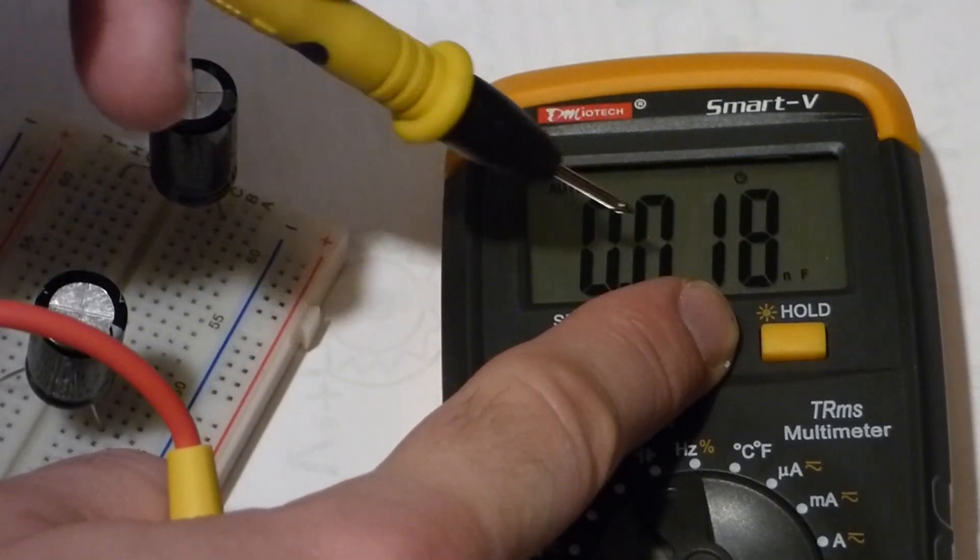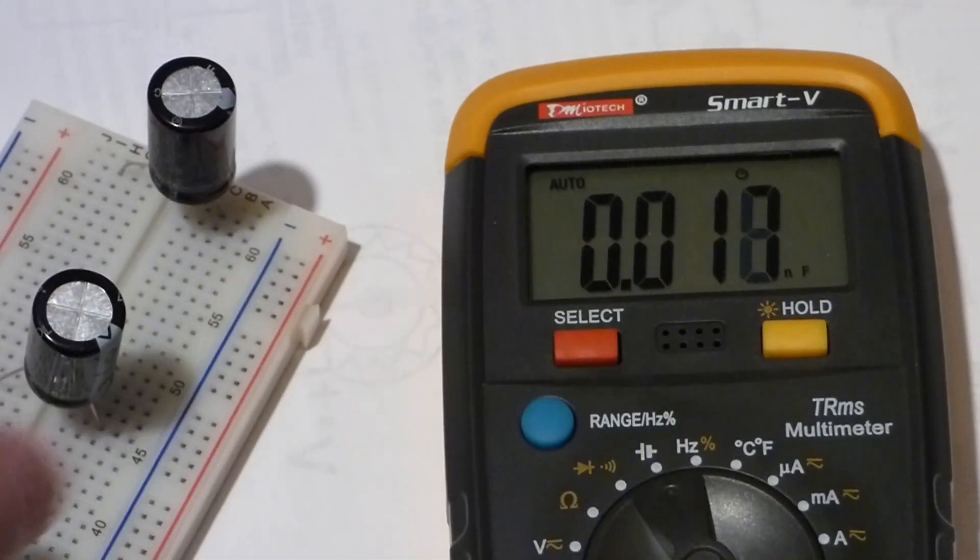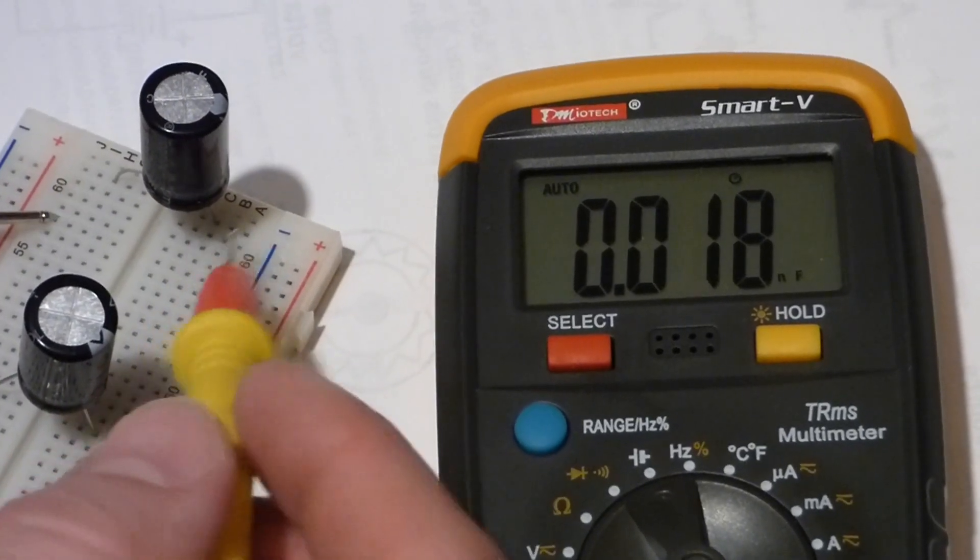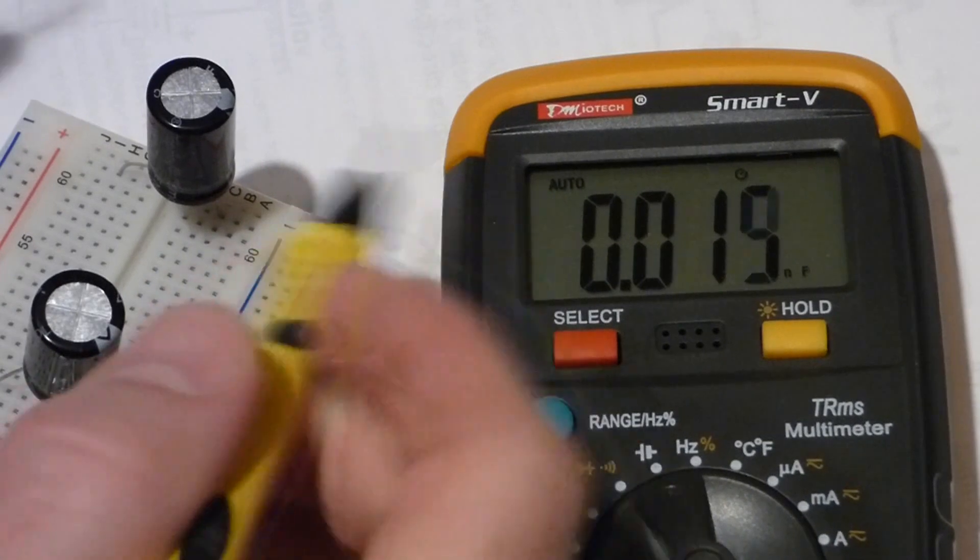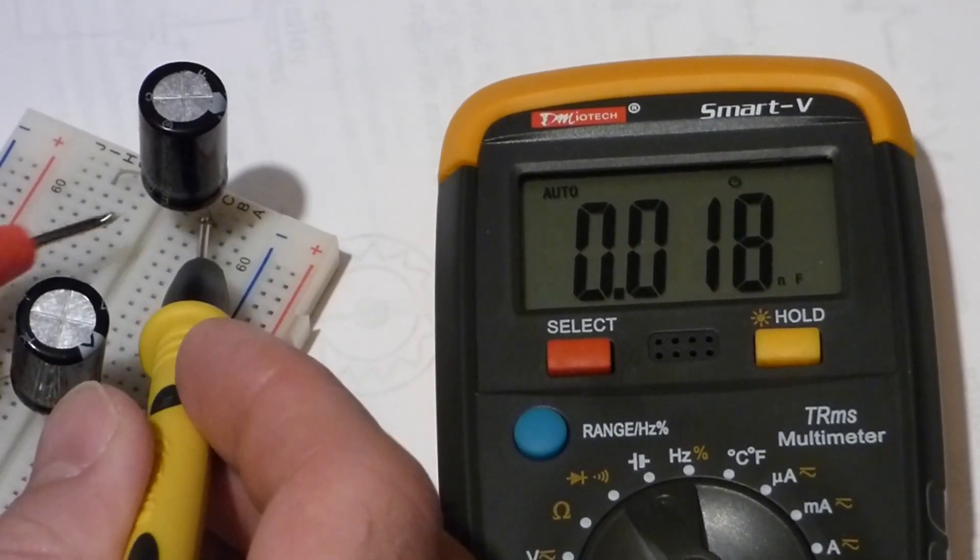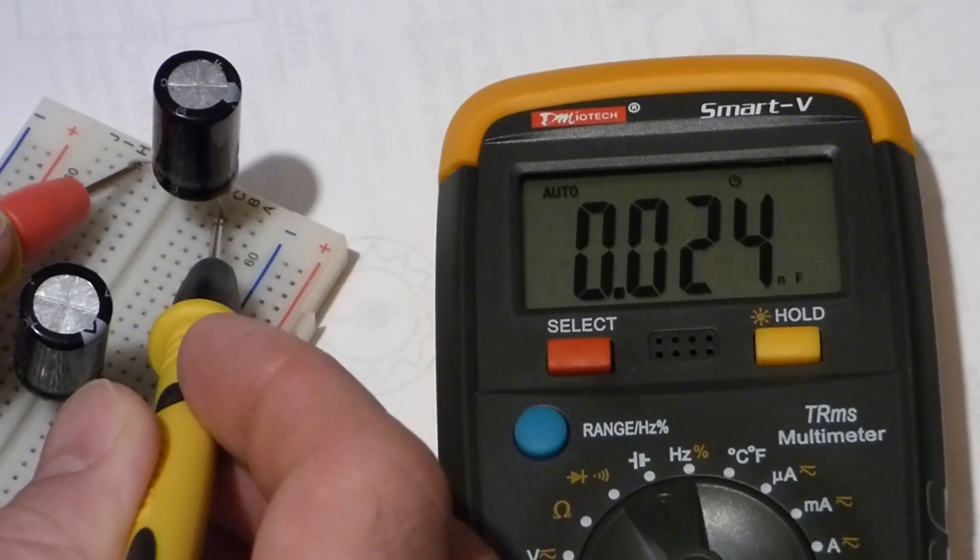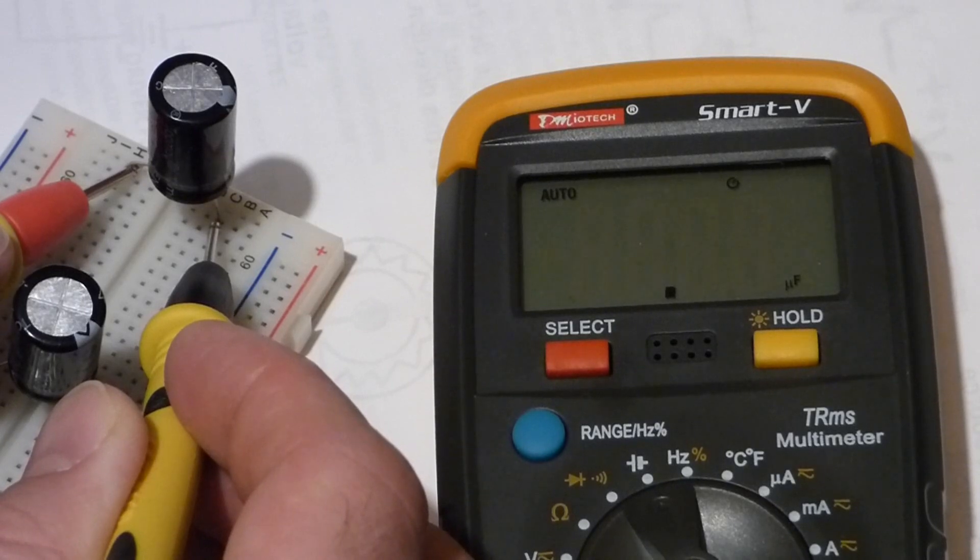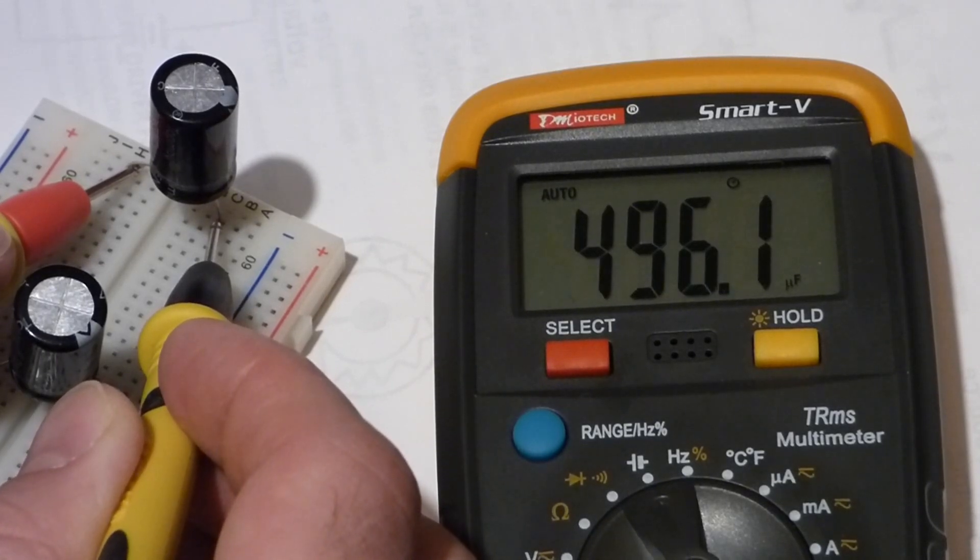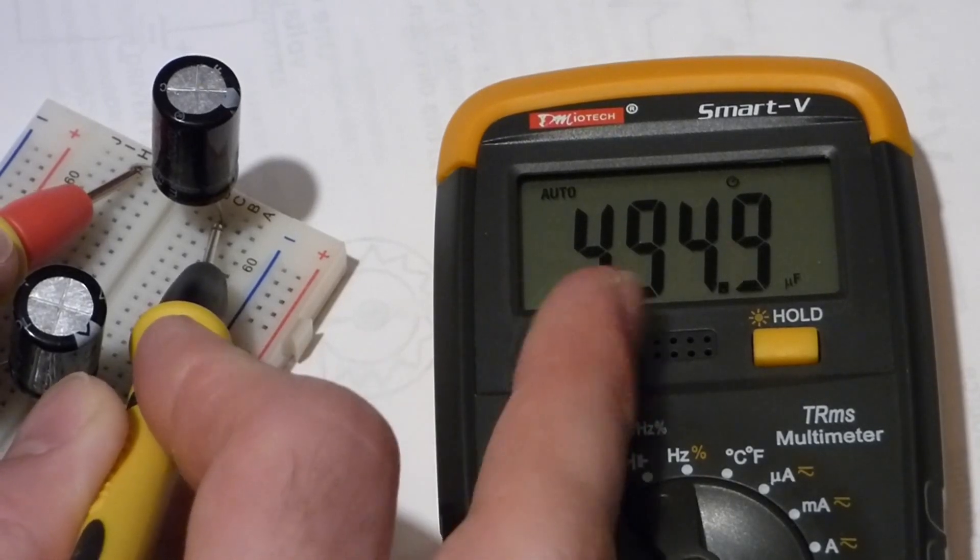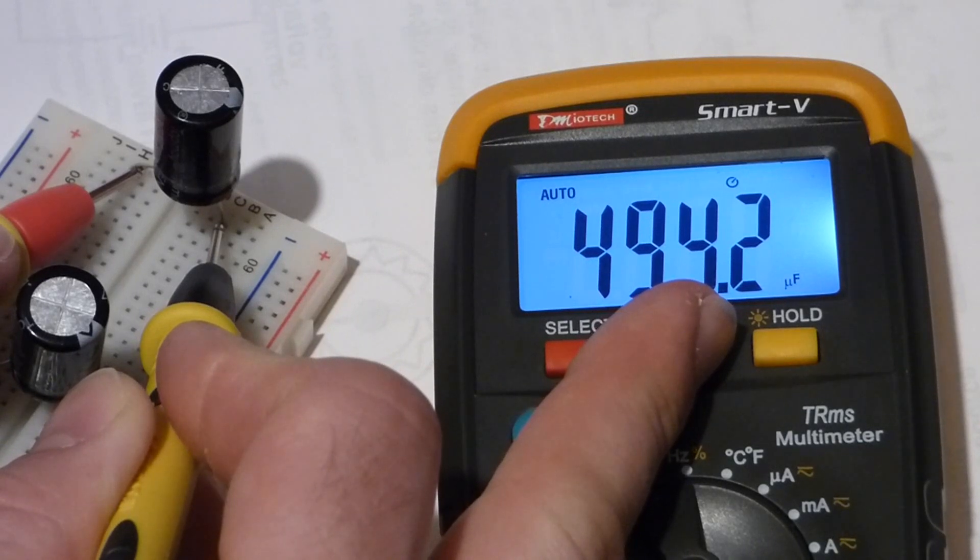Black lead goes to the negative side—stripes there—and the positive. Now we hold a little bit, and I'm going to let it settle a little. It's about 495. You can see a little better.